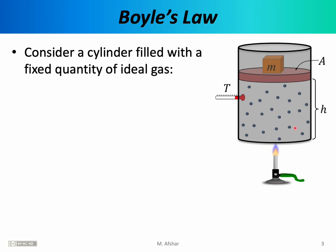We have filled the cylindrical container with some ideal gas, and then we have capped it with a piston. The piston is essentially a disk with cross-sectional area A, and it prevents the gas from escaping the cylindrical container. The piston is free to move up and down, but it does seal the gas inside. The gas inside has some pressure, and therefore it exerts an upward force on the piston. To keep the piston in place, we'll place some mass or some weight on top of the piston to hold it down.